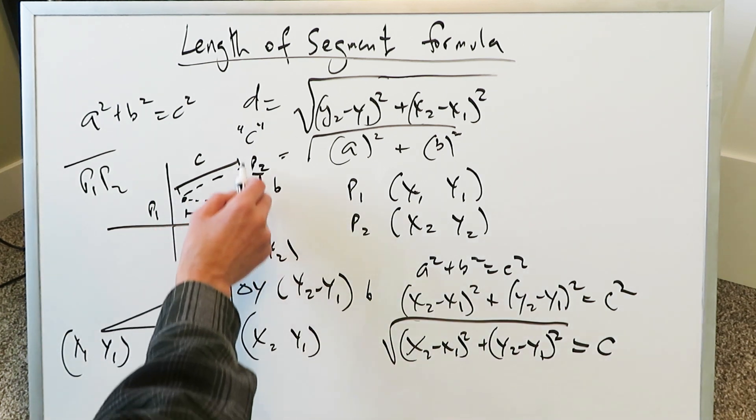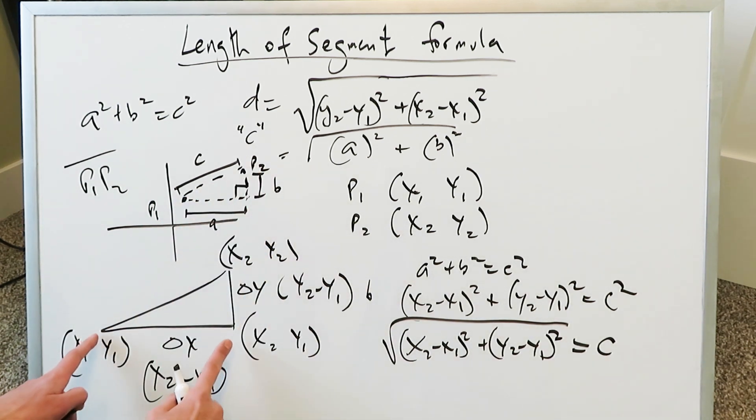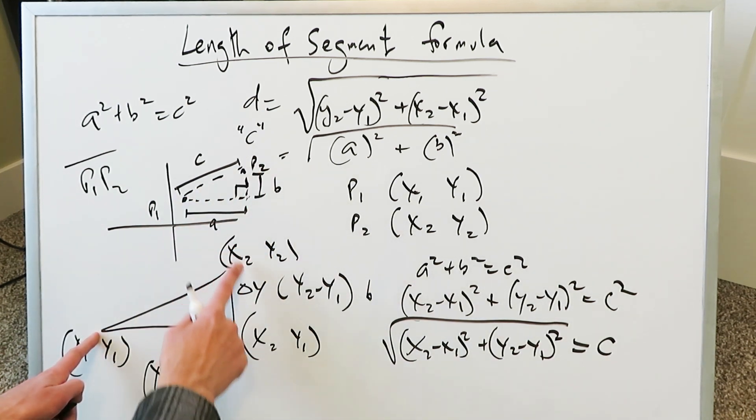If a is represented by x2 minus x1 and b is represented by y2 minus y1, you have a squared plus b squared equals c squared. Plug these in. A here is x2 minus x1 whole square. B is y2 minus y1 whole square.